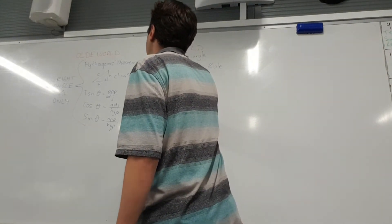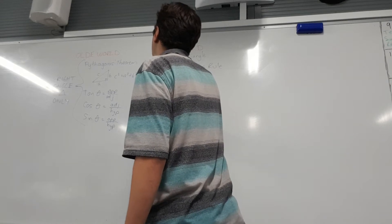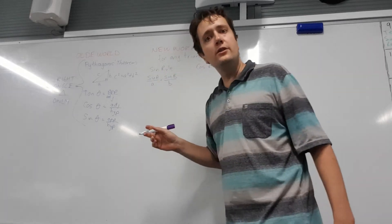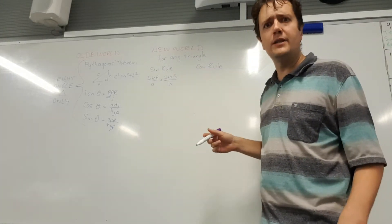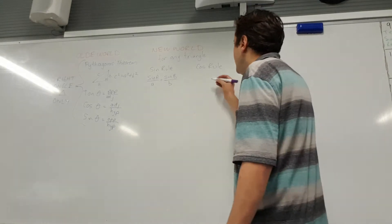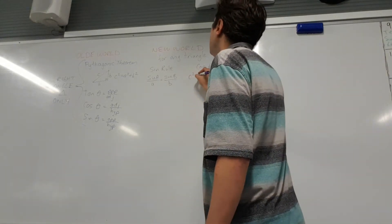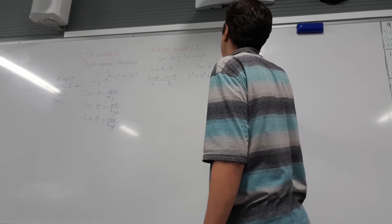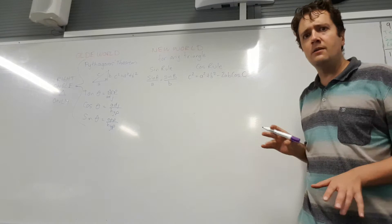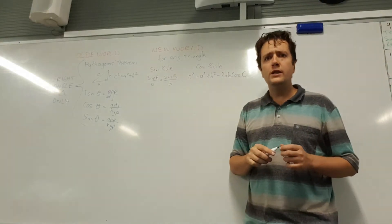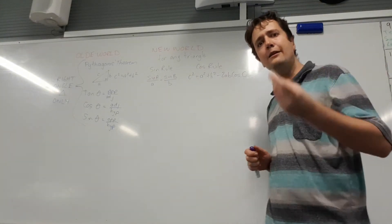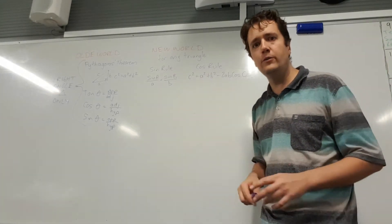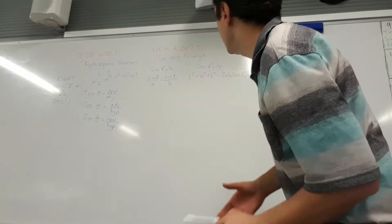The sine rule looks something like this: sine A over a equals sine B over b. You can actually continue that pattern — you can also put equals sine C over c if you really want. And the cosine rule: c squared equals a squared plus b squared take 2ab cos C. One of the first things that jumps out is you need to be familiar with a labelling system used in both of these rules.